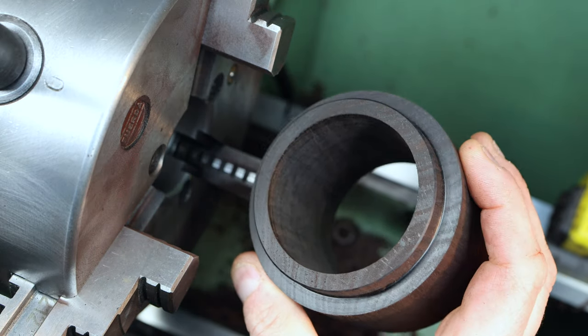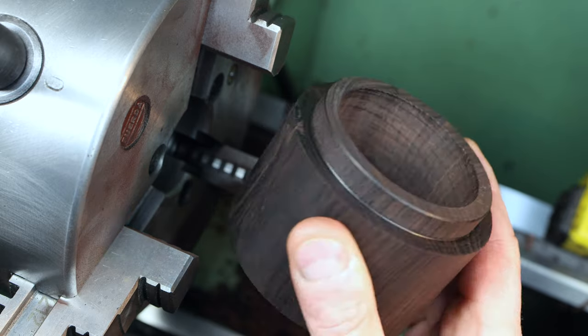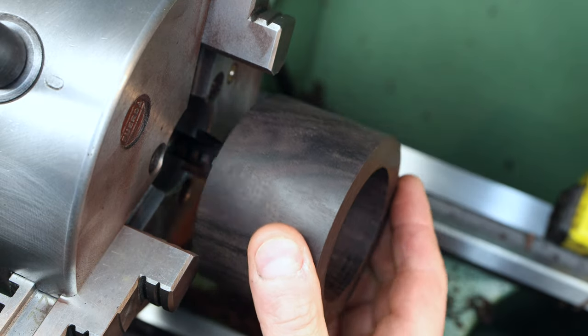Now we've got the walls of the base complete with that lip we're going to go back to the lid and machine the recess.